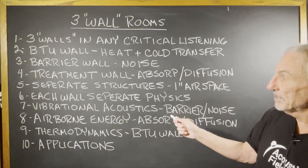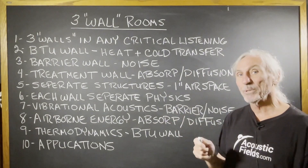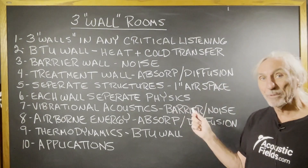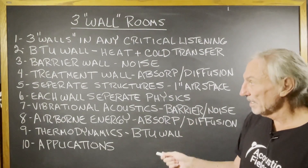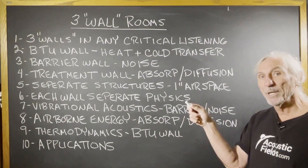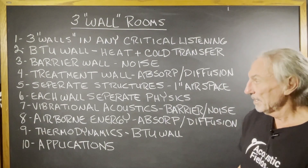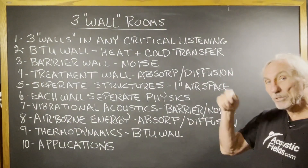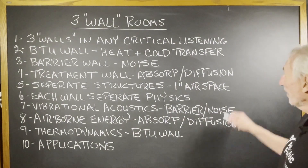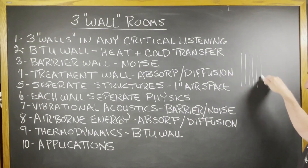What you have to realize is that each wall is a separate physics — I think that's where the problem is. Each wall has a separate function and different physics. Vibrational acoustics is always about noise transmission — we're reducing the vibration signature of the noise from source to receiver, and we do that by building a barrier. Then we have airborne energy, which is absorption and diffusion inside the room. And then thermodynamics for the BTU wall. All three walls, technically, should be separate structures.